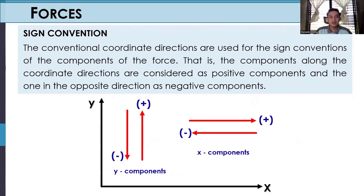For our sign convention, the conventional coordinate directions are used. Components along the coordinate directions are considered positive, and those in the opposite direction are negative. So if our force is going upward, that is positive; going downward is negative. Going to the right is positive; going to the left is negative. But you can interchange these — just be consistent throughout your solution.